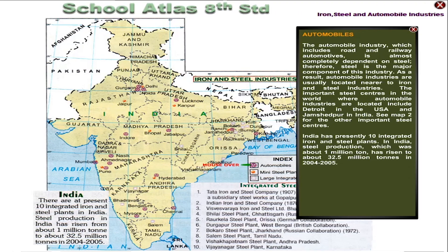See Map 2 for the other important steel centres. India has presently 10 integrated iron and steel plants. Steel production in India, which was about 1 million ton, has risen to about 32.5 million tons in 2004 to 2005.